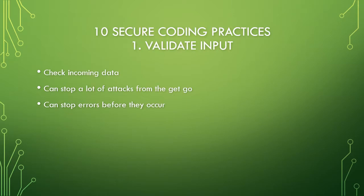We have 10 secure coding practices. The first one is extremely important: validating input. This means that you check the data that's incoming to you — when software asks for user input, it checks that user input before it gets implemented anywhere. This can stop a ton of errors before they even start. If you check the user input, you can stop the user from trying to exploit things going on in your program.